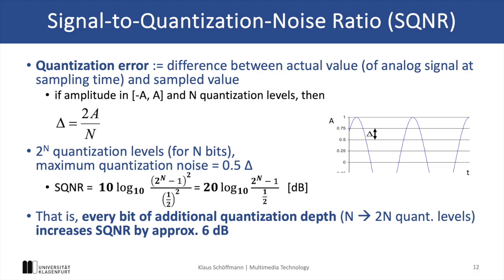In general, SQNR is expressed as a logarithmic formula again, with 10 times the logarithm of the power of the signal divided by the power of the quantization noise. And here it is important to understand that the quantization noise comes from rounding the analog signal values to the nearest quantization level.